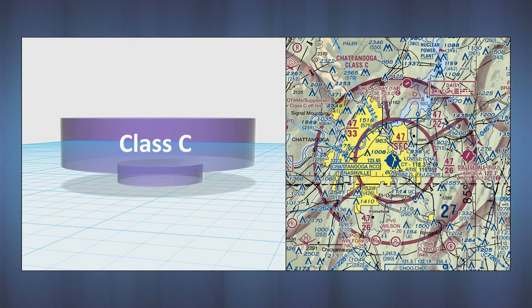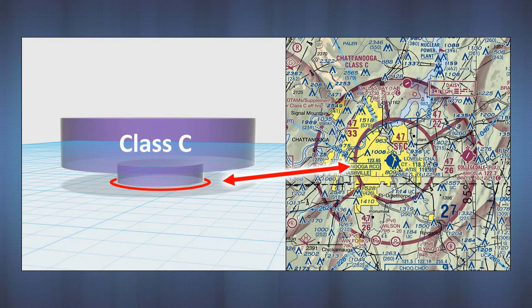Next on the list is Class C. These airspaces generally consist of a central core, the surface area, and a shelf area above that that usually has a 10 nautical mile radius. They are outlined on the sectional by solid magenta lines. In this example at Chattanooga, Tennessee, the bottom of the shelf area isn't flat. It's stair-stepped with three different floor levels.